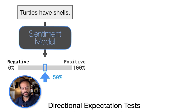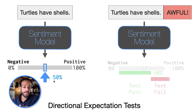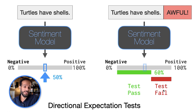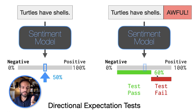The third type is called a directional expectation test. We have a sentence, the model predicts it as 50% positive — right between positive and negative. Then we add a negative portion to the end. Would the score increase or decrease? If it decreased, the test passes. If the model says the sentence with the word 'awful' is actually more positive than the original, that's a test failure. The idea is that if we perturb the input in a way we know should shift the prediction in one direction, the model shouldn't go the other way — it can go up a little bit, but not too much.